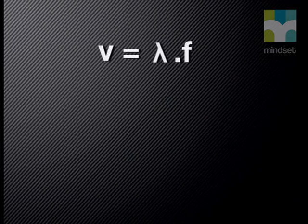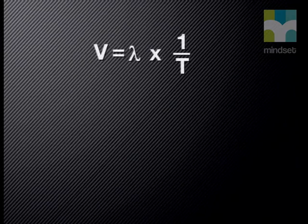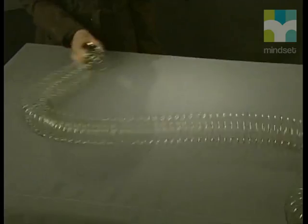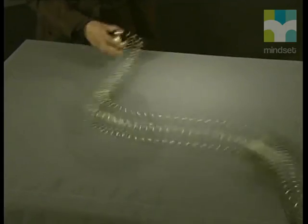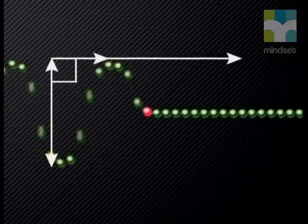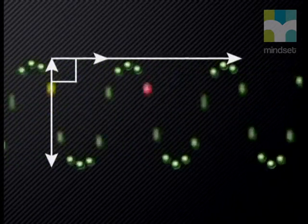Before we end this lesson, I want us to apply the skills we have developed today by considering the horizontal movement of the wave through the medium. We know that the wave equation to determine the velocity of the wave is v equals lambda times frequency, or v equals wavelength times 1 over period. We also know that a wave is a series of identical pulses that move through a medium, and in a particular medium the period and the wavelength do not change.